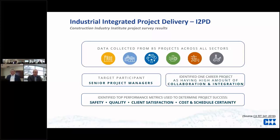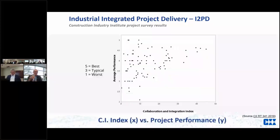There was a lot of effort to put that together. The academics analyzed the data and we met in Dallas at the head office of a large pipeline company. With a little prep, they put this slide up showing the results of the survey — each dot represents one of the 85 projects. On the Y-axis is average performance, and on the X-axis is the collaboration and integration index. Based on the answers to the questions, their performance was plotted against the collaboration and integration index.